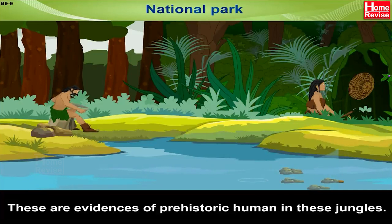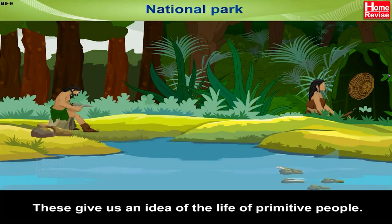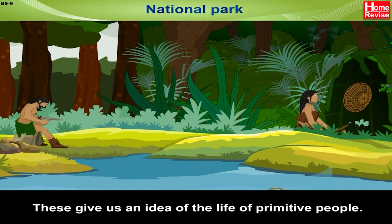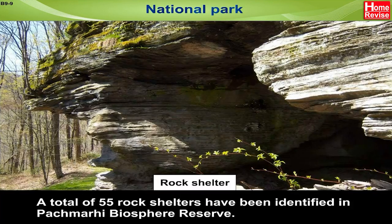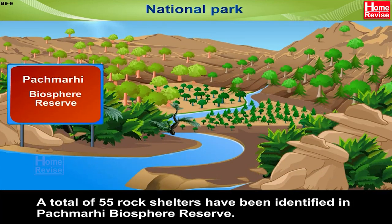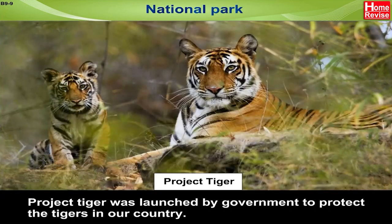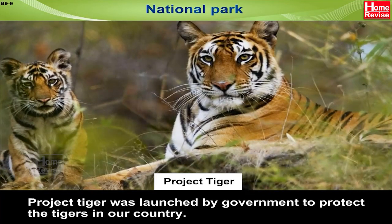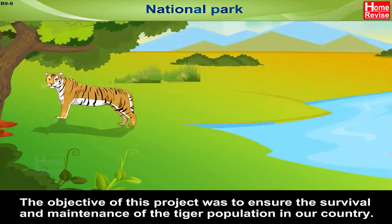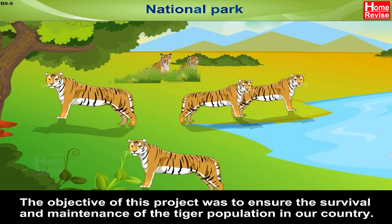Rock shelters are also found inside the Satpura National Park, and these are evidences of prehistoric humans in these jungles. Rock paintings are found in the shelters, and a total of 55 rock shelters have been identified in the Panchmarhi Biosphere Reserve. Project Tiger was launched by the government to protect tigers, with the objective of ensuring the survival and maintenance of the tiger population in our country.